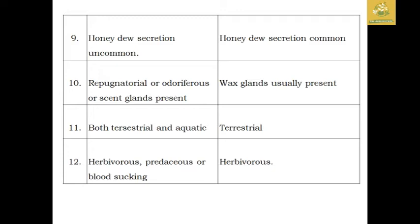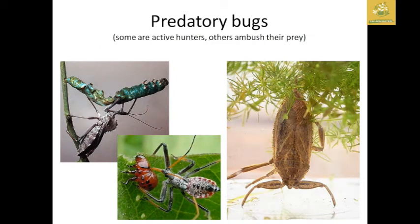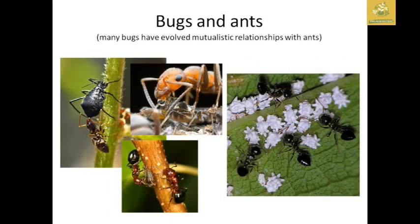Honeydew secretion is uncommon in Heteroptera but common in Homoptera. Repugnatorial or odoriferous silk glands are present in Heteroptera, and wax glands are usually present in Homoptera. Heteroptera includes both terrestrial and aquatic forms — herbivores, predators, and blood-suckers — while Homoptera are only herbivorous. Economically, they are important vectors of many plant diseases. Some predatory bugs are active hunters that ambush their prey, and some bugs have a mutualistic relationship with ants.